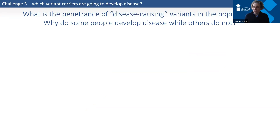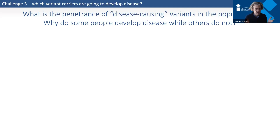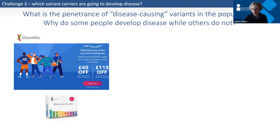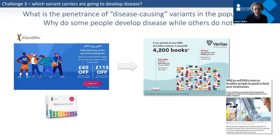The third challenge — why some people who carry a genetic variant manifest disease while others don't — applies both in families and increasingly as genetic testing becomes routine for other reasons. For example, someone diagnosed with cancer may have genetic testing to determine the cancer type, and the question arises: should we also look at their heart genes while we have the DNA? More broadly, people can now go into Boots and, for between £80 and £150, have their genome analyzed through companies like 23andMe — though that test only covers about one percent of the genome. Other companies offer whole genome sequencing, and there was recent discussion about the NHS potentially offering this as a service.